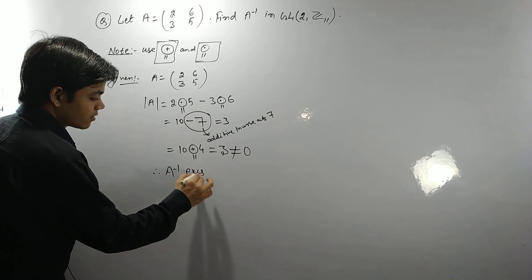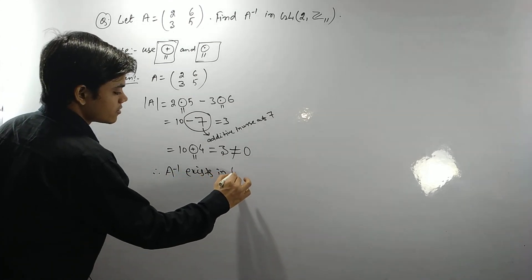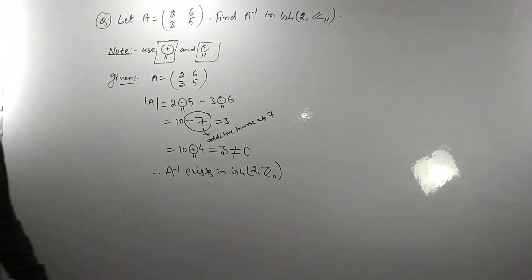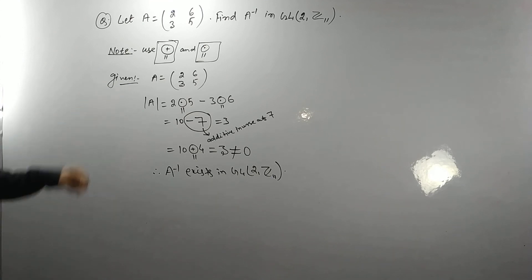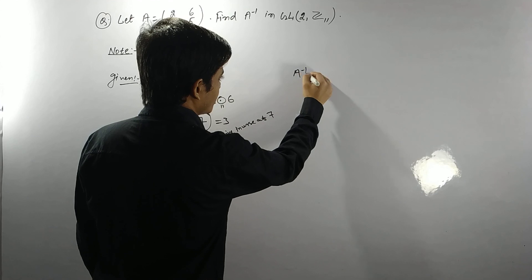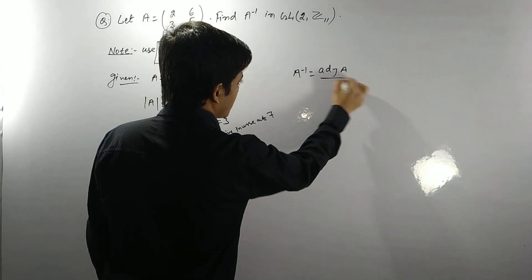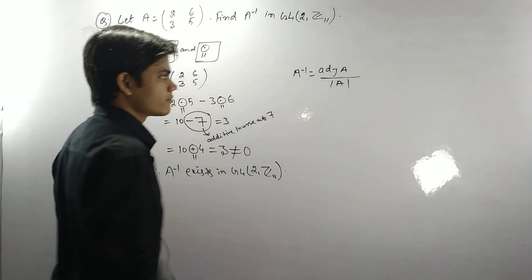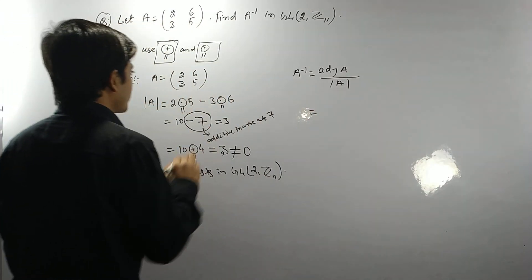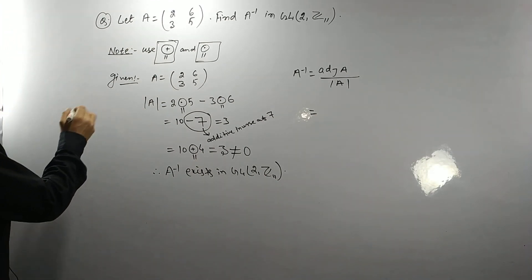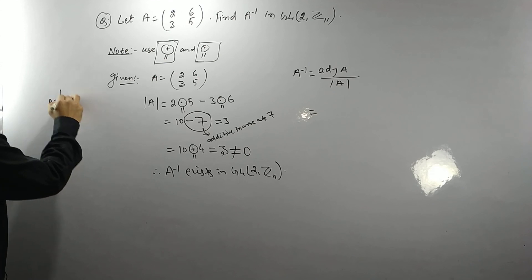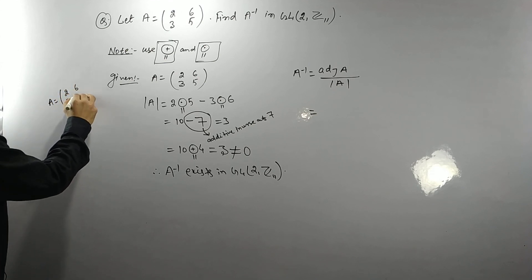So A⁻¹ exists. Now, what is the formula for A⁻¹? It is adjoint of A divided by determinant of A — the same formula as usual. Let me recall: A = [[2, 6], [3, 5]].